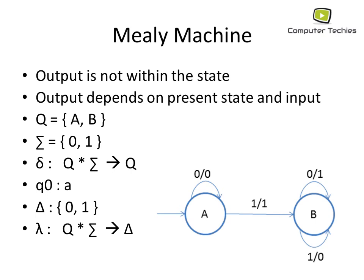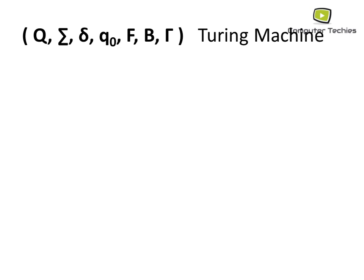On state A with input 1, it leads to state B with output 1. On state B with input 0, it leads to state B with output 1. These are the δ and λ functions of the Mealy machine. If you see this type of arrangement — output on the transitions rather than within the states — it is definitely the Mealy machine.